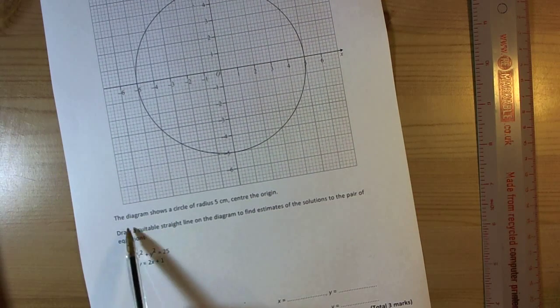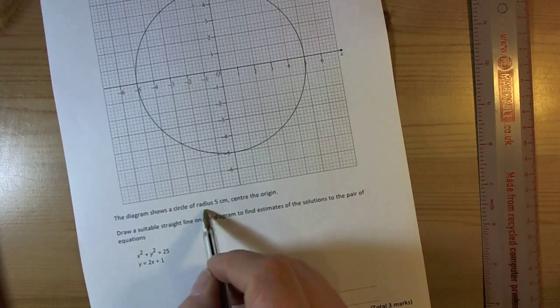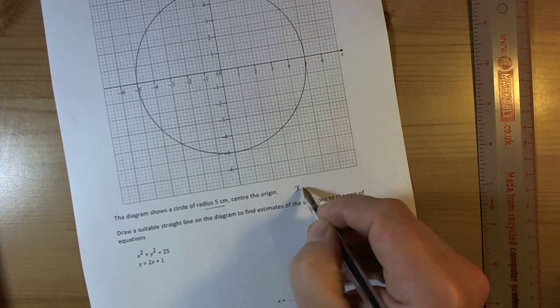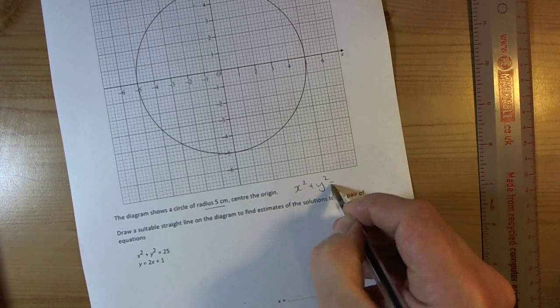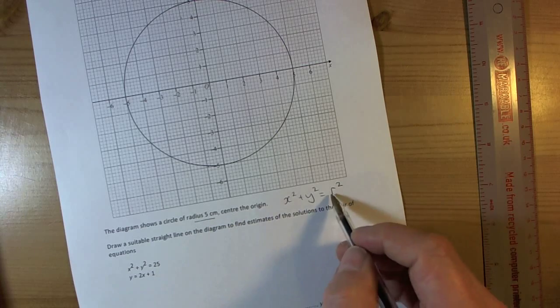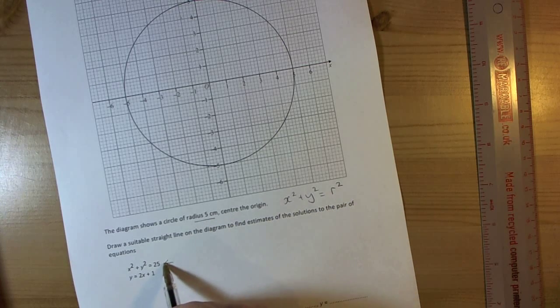And we're looking at the information they tell us. It's a circle of radius 5. Well, we always remember that the equation of the general circle is x squared plus y squared equals r squared. So in this case, because they tell us the radius is 5, r squared would be 25, as they're explaining here.